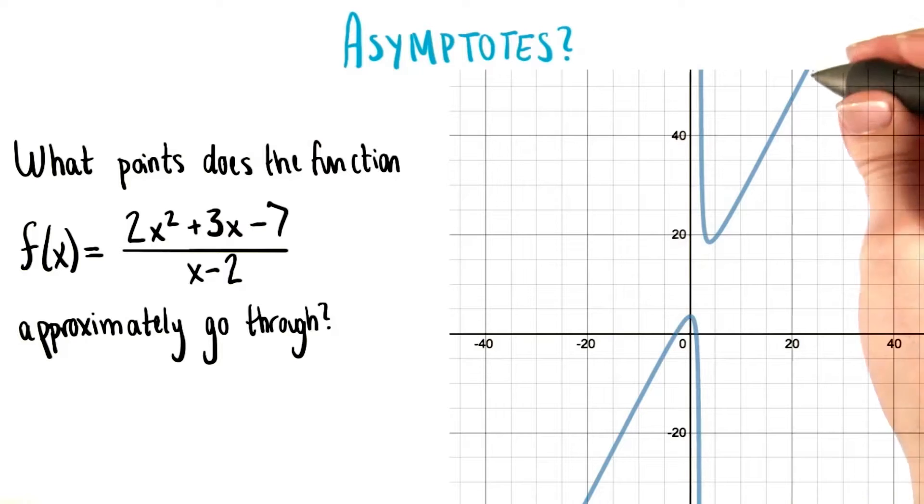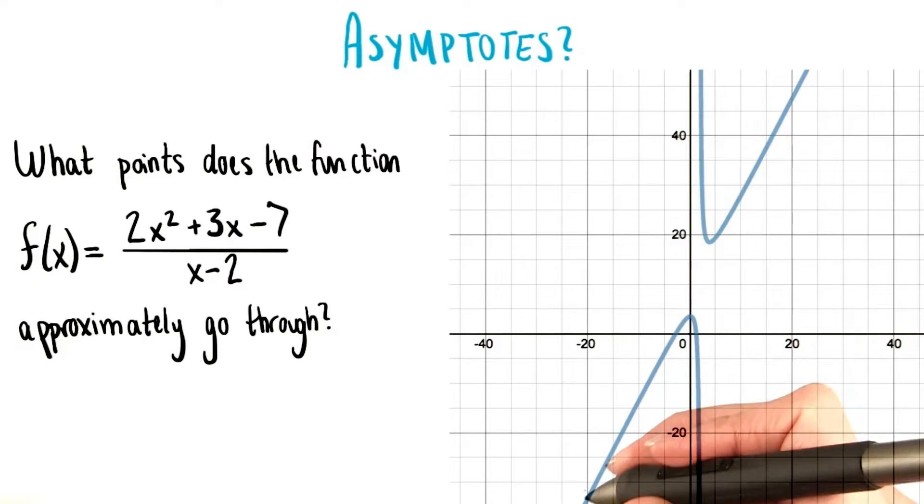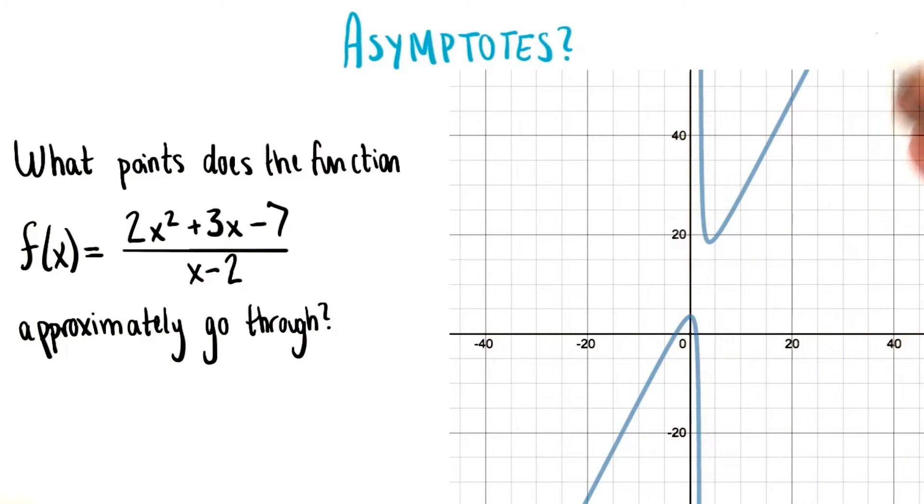And here it is. We can see our slant asymptote right here. The graph is getting closer and closer to it as x gets bigger on both sides, positive and negative.